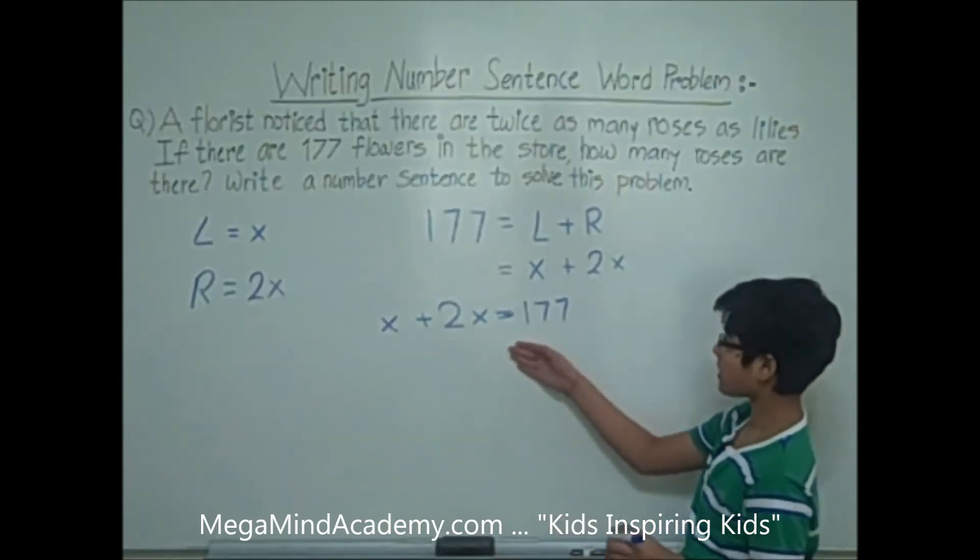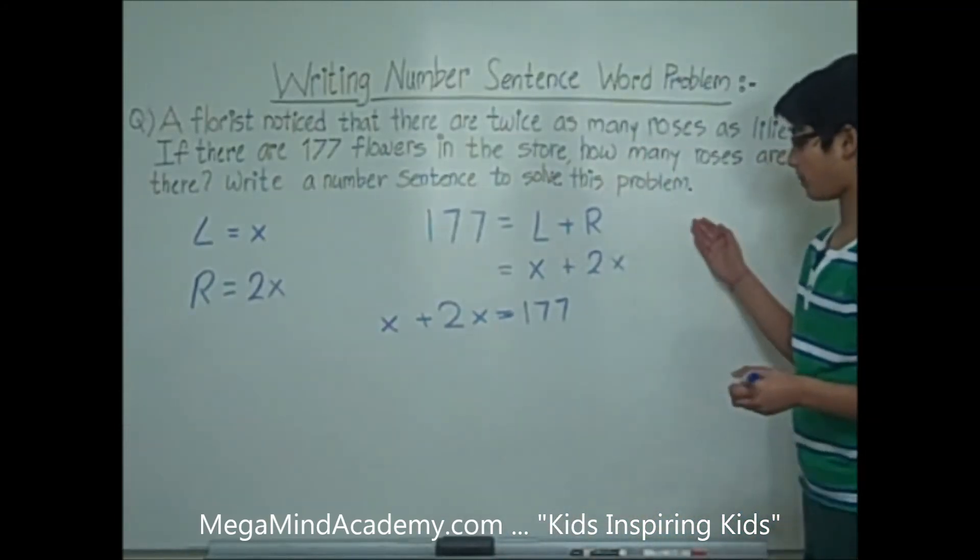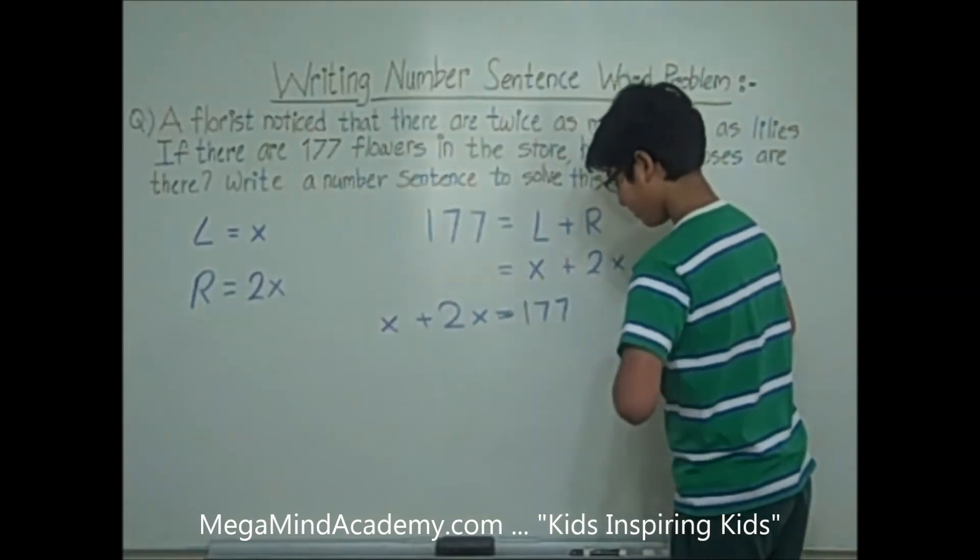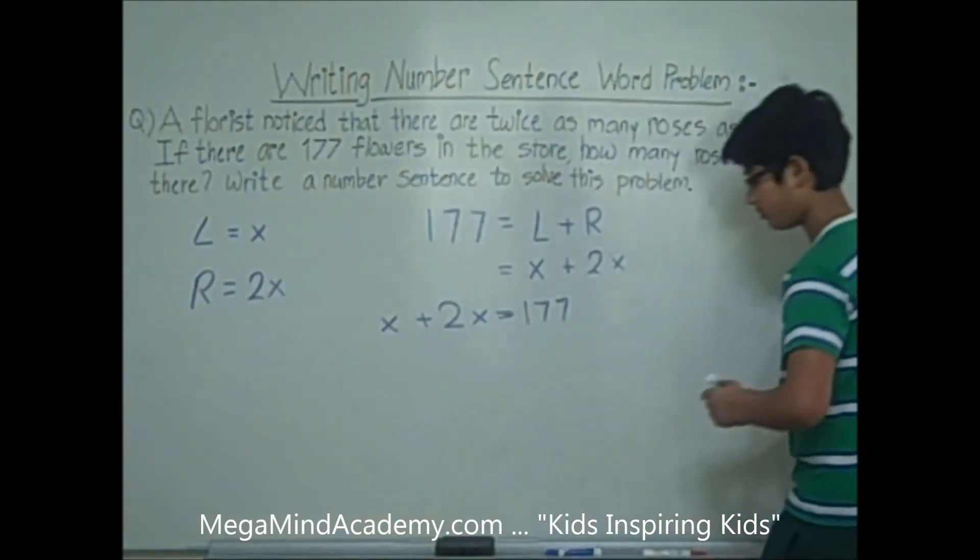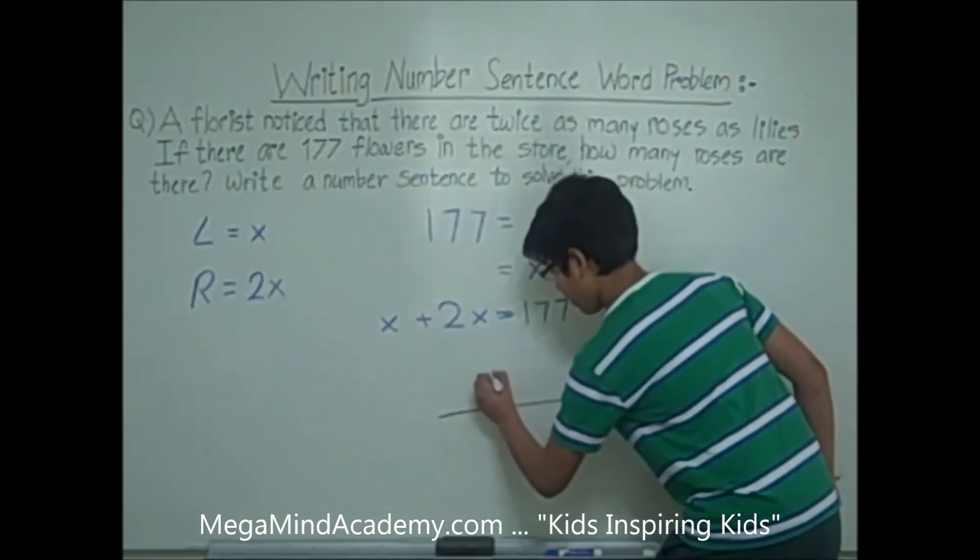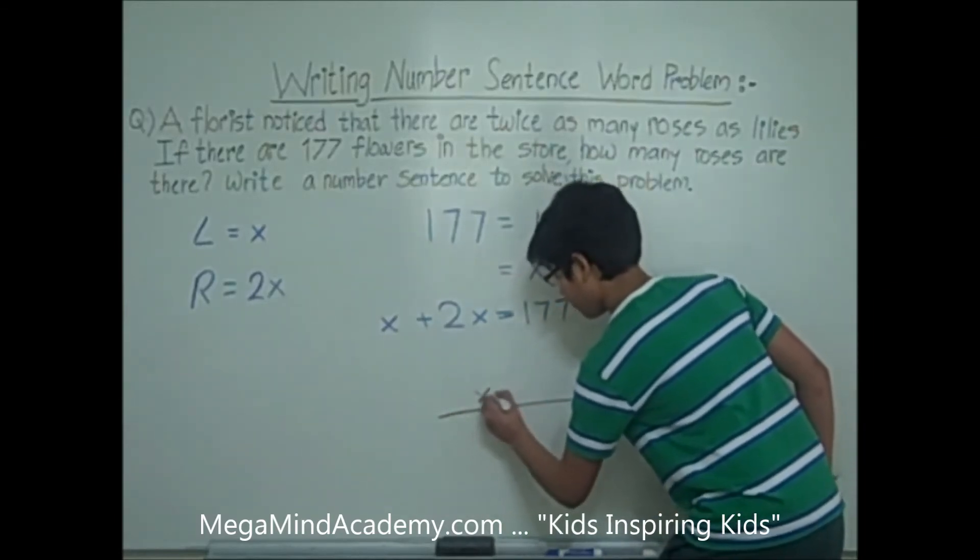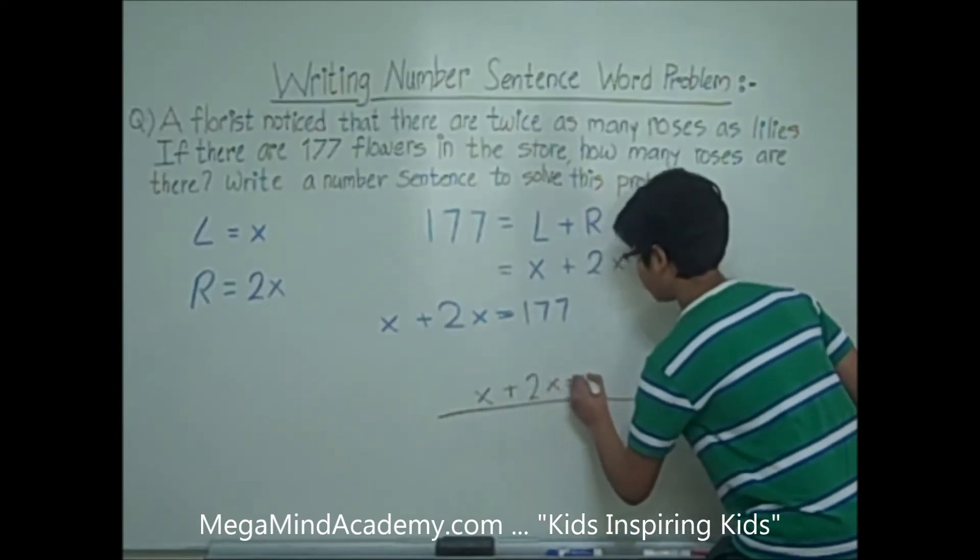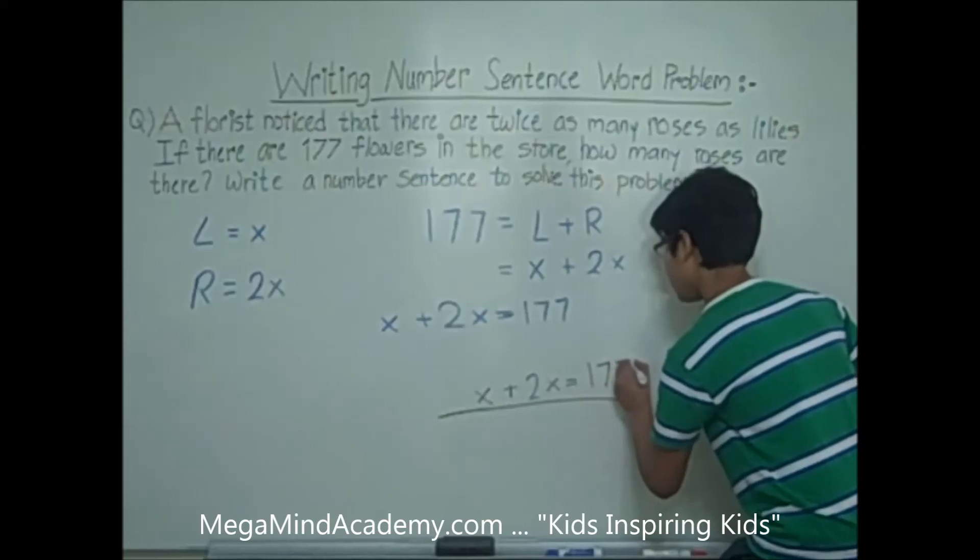So, this is the number sentence that solves this problem. Let's write that down: x plus 2x equals 177.